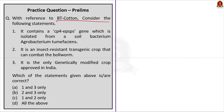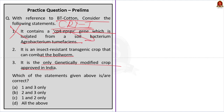Question two: With reference to BT cotton, consider the following statements — (1) It contains a CP4 EPSPS gene isolated from soil Agrobacterium tumefaciens; (2) It is an insect-resistant transgenic crop that can combat the bollworm; (3) It is the only genetically modified crop approved in India. Which options are correct? The answer is Option B — statements two and three only. Statement one is incorrect: BT cotton has genes cry1Ac and cry2Ab from Bacillus thuringiensis, whereas CP4 EPSPS gene is used for HTBT cotton.